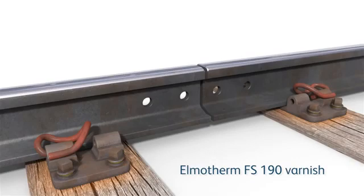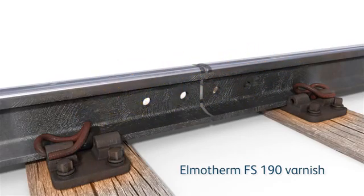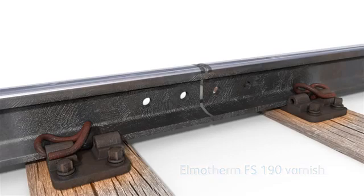Apply Elmatherm FS190 varnish to the rail ends and fishing surfaces including the first base plate and clip on both sides of the joint and leave for approximately 20 minutes to dry.